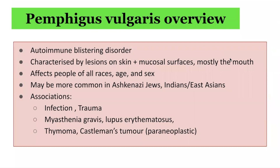Pemphigus vulgaris is an autoimmune blistering disorder characterized by lesions on the skin as well as mucosal surfaces, including the mouth. It affects people of all races, ages, and sex, though it may be more common in Ashkenazi Jews, Indians, and East Asians.